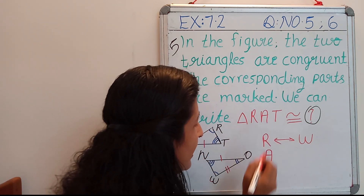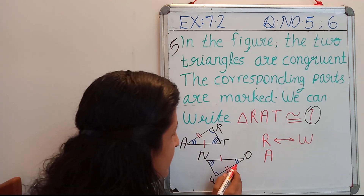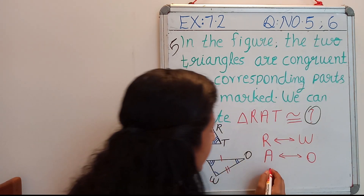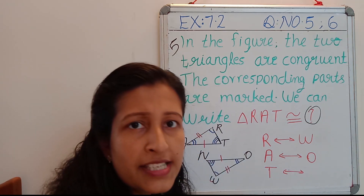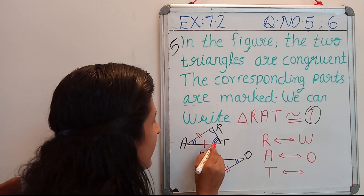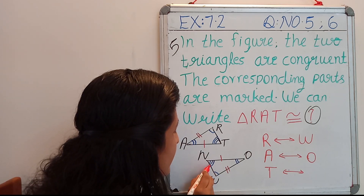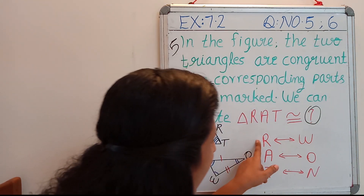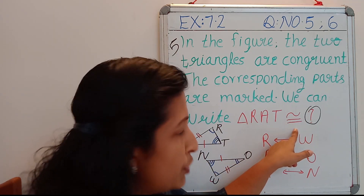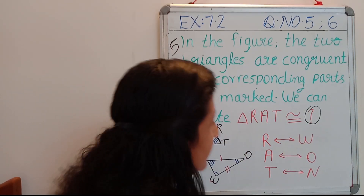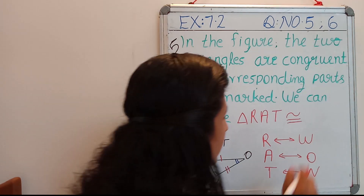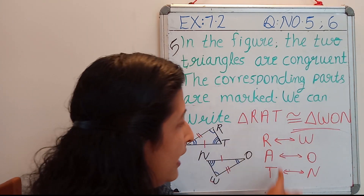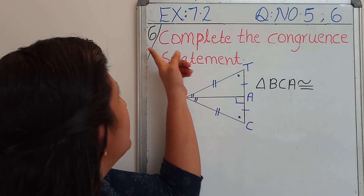The second letter, A — A is a double line, so A is corresponding to O. Then the last one, T — T has three lines, and N also has three lines, so T is corresponding to N. So we can write down: triangle RAT is congruent to triangle WON. So instead of the question mark, we write triangle WON. This is our answer.